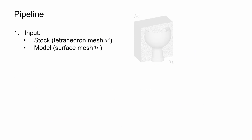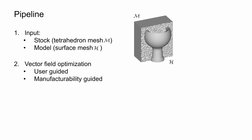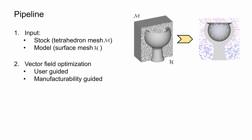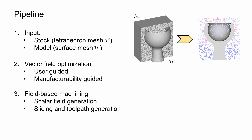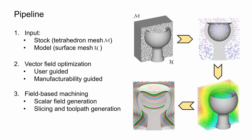For the pipeline, we have a model H and a stock of material M. The difference between these is what needs to be removed. In the space of the removable volume, we introduce a vector field which is an interpolation of the user-defined directions at a few sample points. After obtaining the vector field, we generate a scalar field whose gradient matches the vector field.